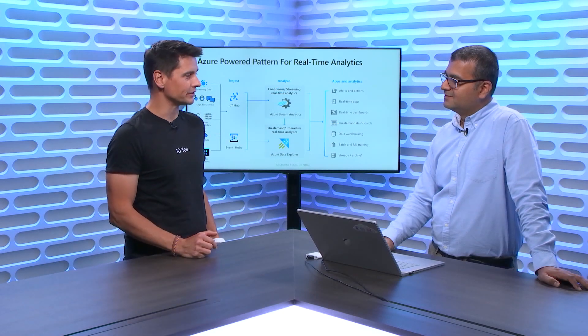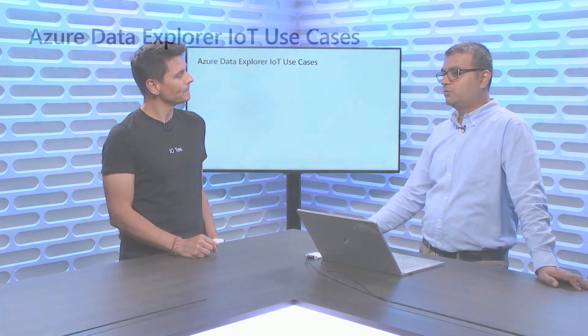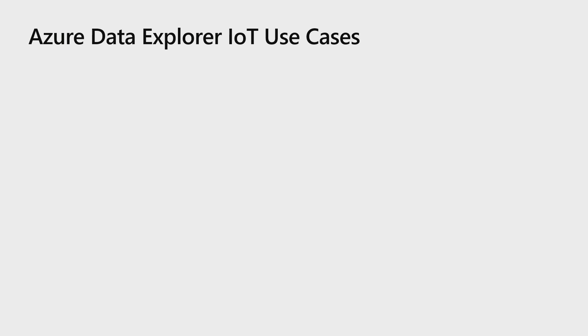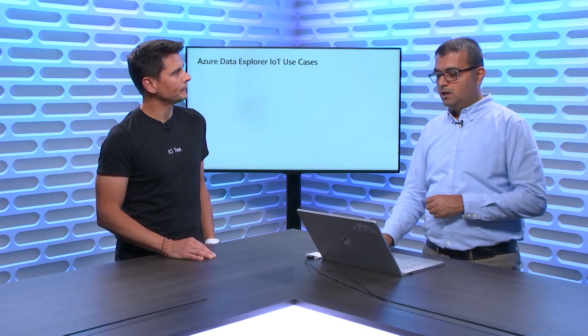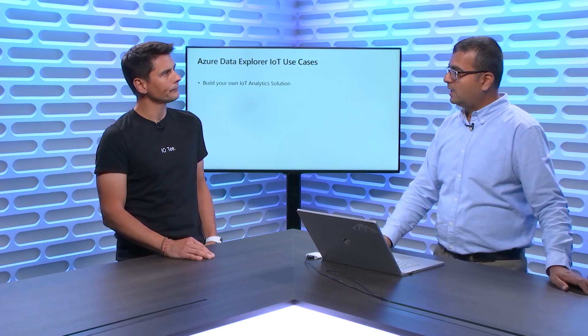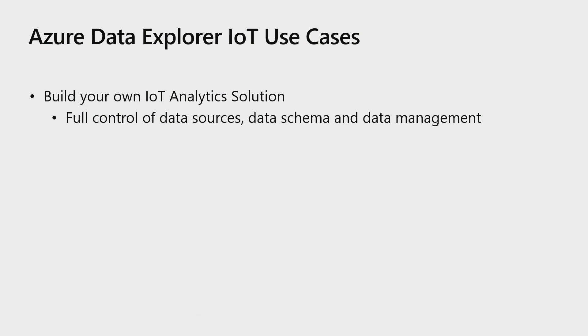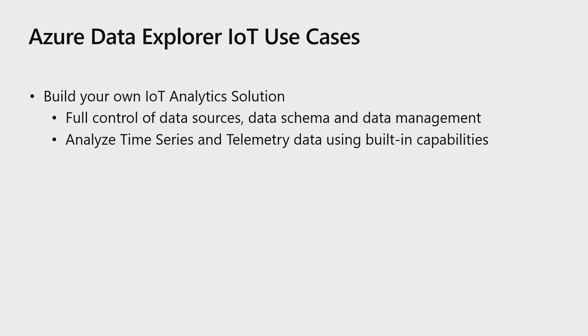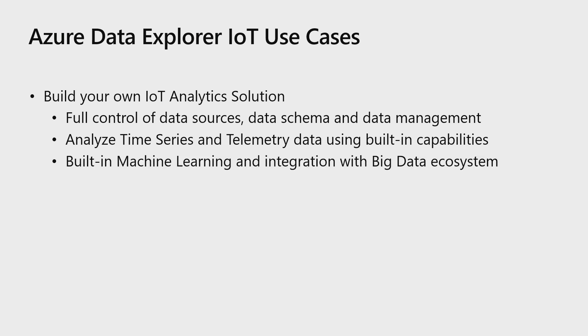Azure Data Explorer is optimized for querying over structured data like time series, unstructured data like text, and semi-structured data like JSON and XML. In IoT use cases, we mostly encounter time series data, and a lot of customers have JSON data they want to bring in. In some scenarios they have sensor data plus telemetry data from controllers which they merge together and do rich analytics. Typical use cases include customers building their own IoT analytical solutions where they need full control on data sources, data schema, and data management, and they analyze time series and telemetry data using built-in capabilities. We also have built-in machine learning capabilities and integration with big data systems like Spark and Data Lake.